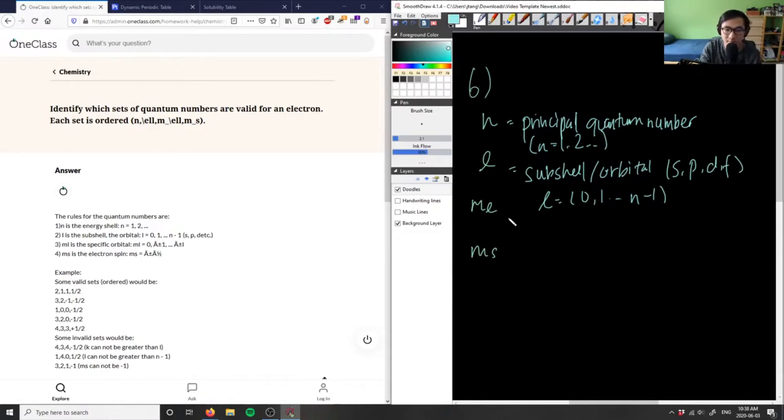ml here is the specific orbital here, or you can think of it as the magnetic number. ml here is going to equal basically plus or minus l, so it's going to go from minus l to zero and then to plus l here.